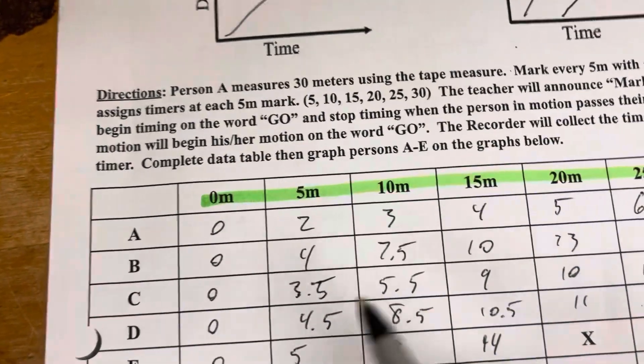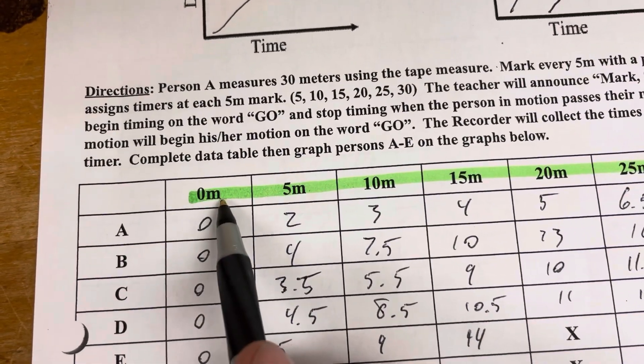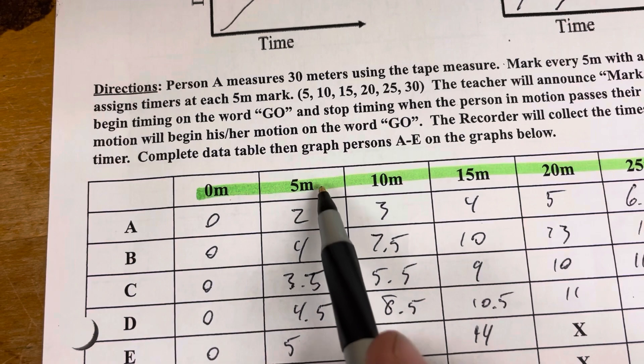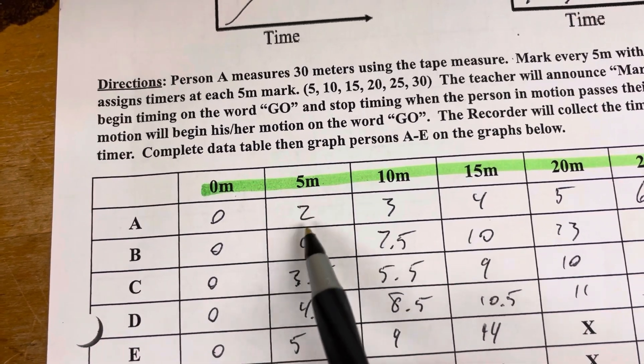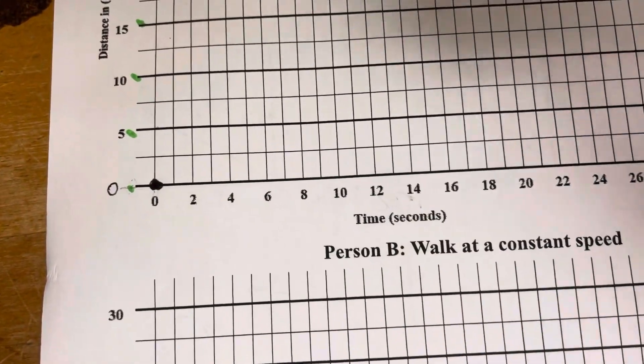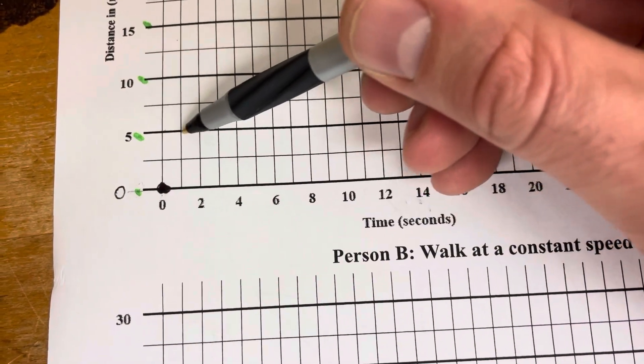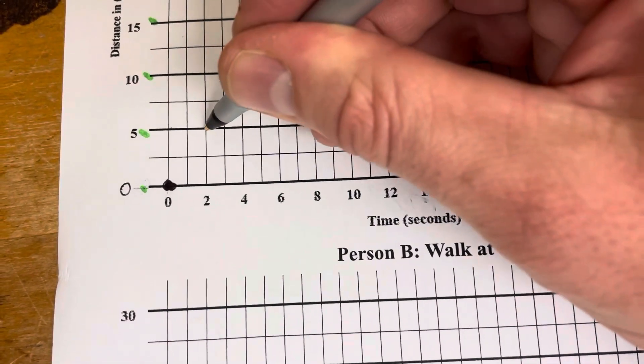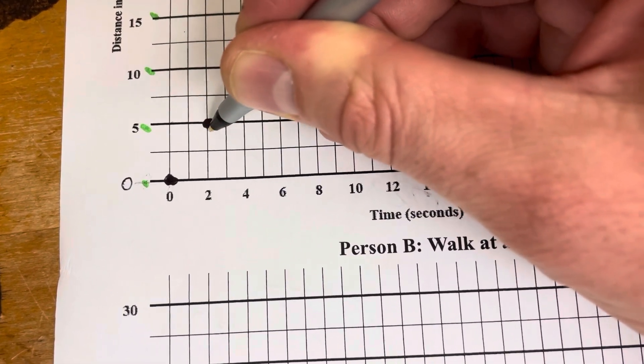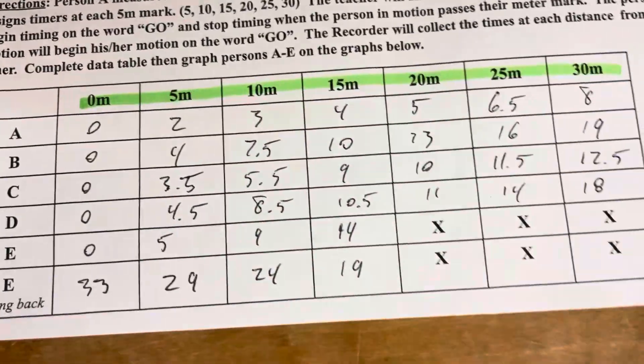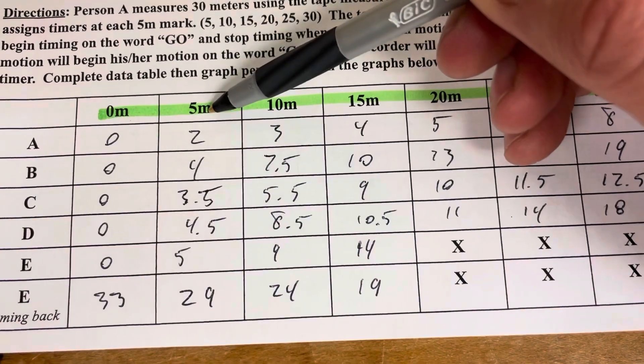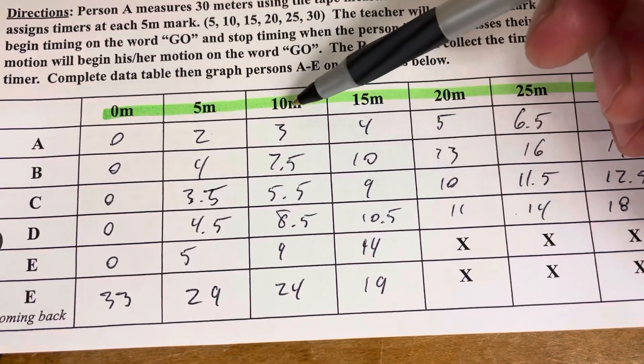Next we're going to do our 5 meter mark. When we go to the 5 meter, we go down to person A, and at 5 meters it took them 2 seconds. So we're going to go up to the 5 meter mark and then mark at the 2. Where that meets we're going to draw a nice big dot, and then we're done with the 5 meter mark for person A.